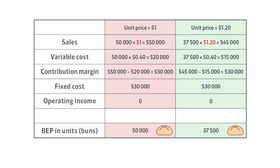Suppose we raise the price of a bun to $1.20. Raising the unit price will allow the bakery to sell 12,500 fewer buns to reach the breakeven point.